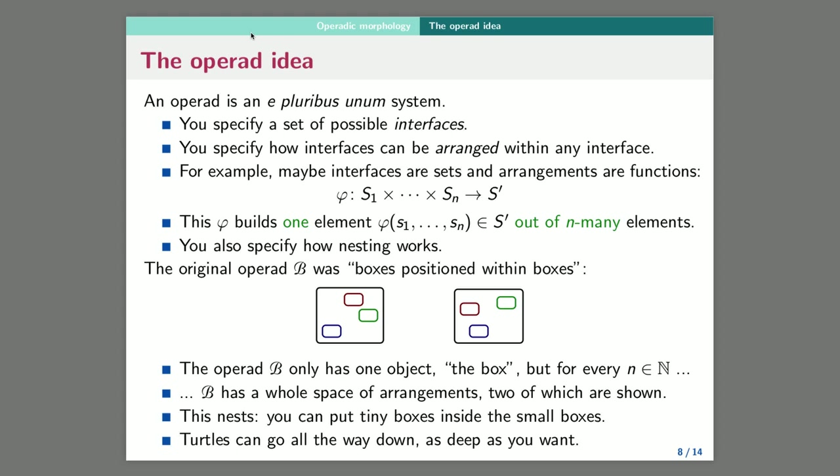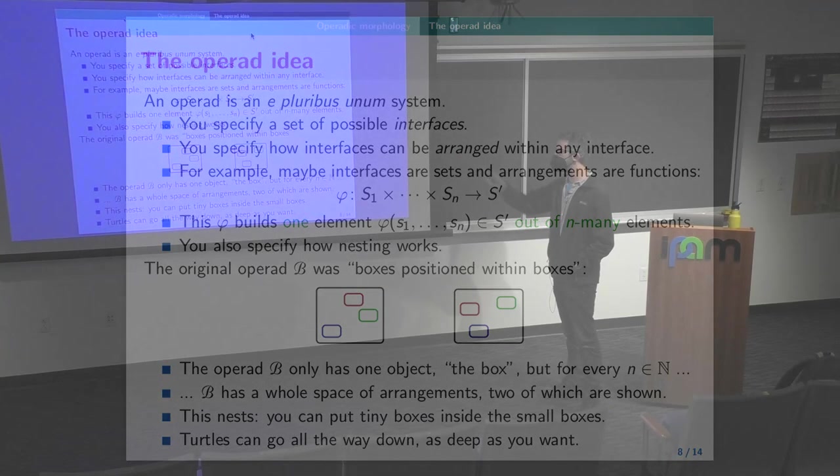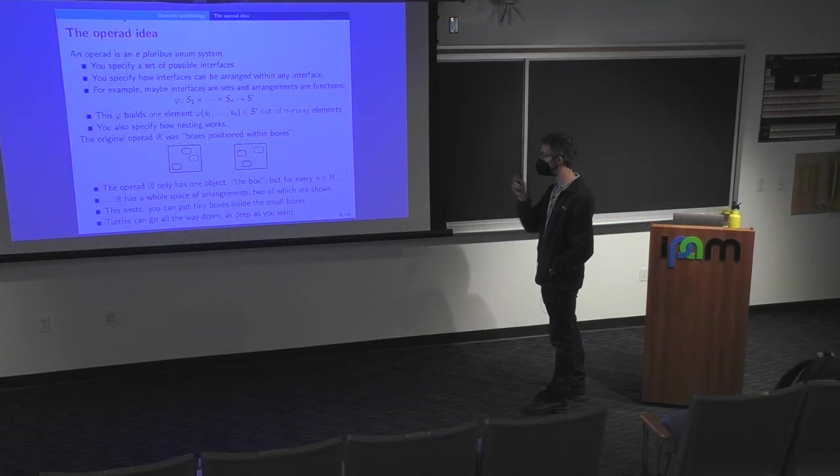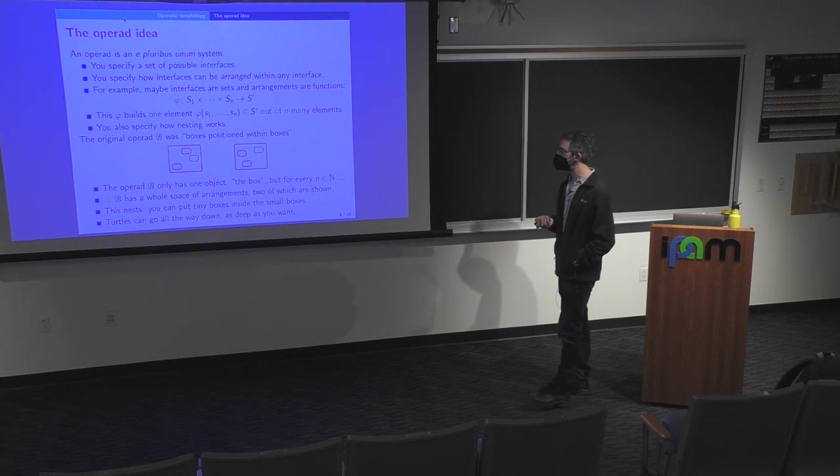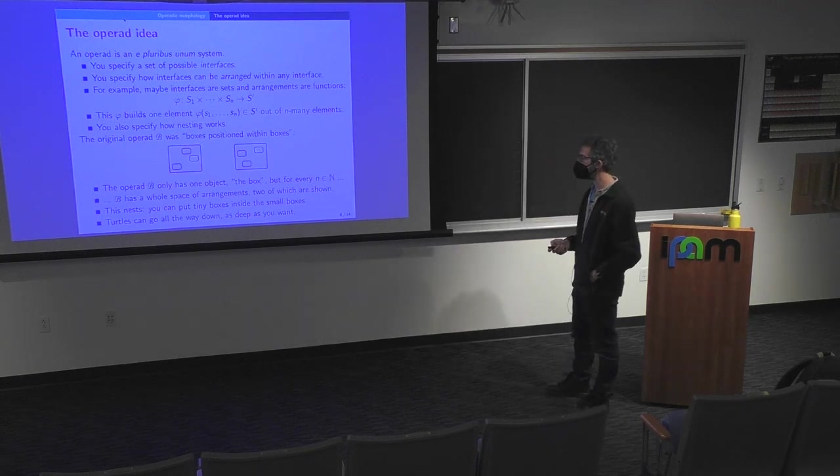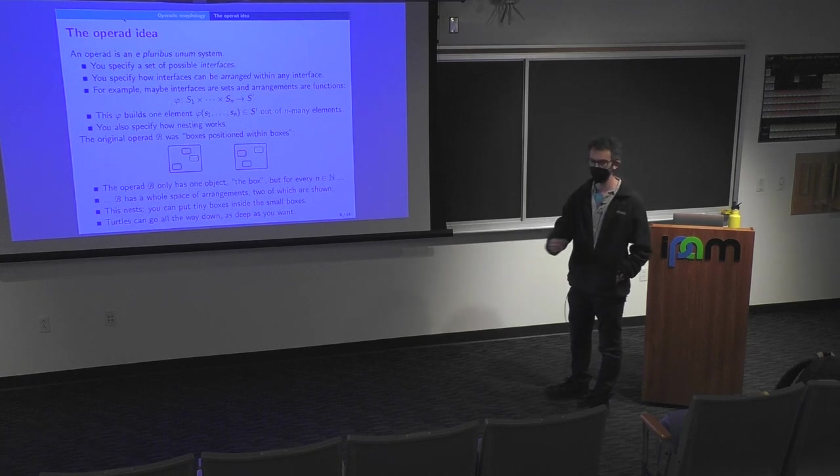So this operad has only one object or one interface called the box. But for every n, it has a whole space of arrangements. Two elements of that space of arrangements are shown. That's an arrangement, and that's an arrangement. And then you can nest that because you can put tiny boxes inside the red box, or inside the green box. And you would get tiny boxes within a big box. And that's the nesting.